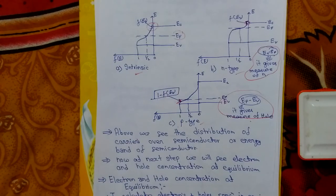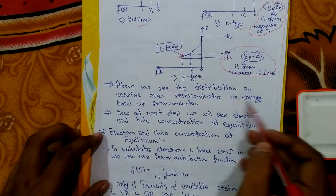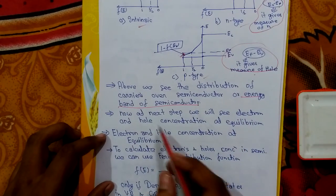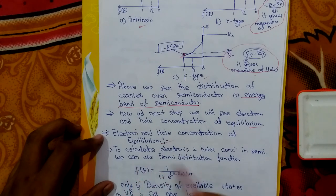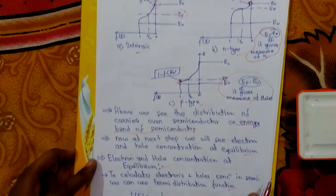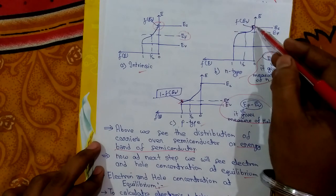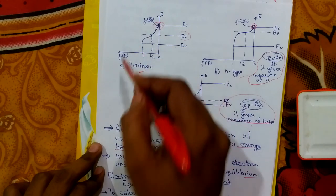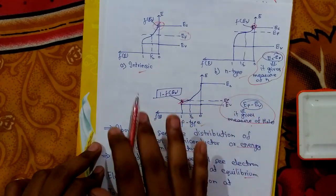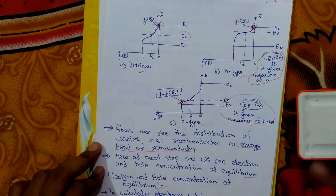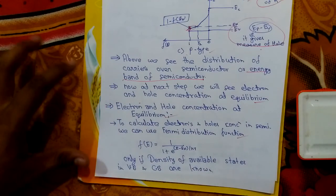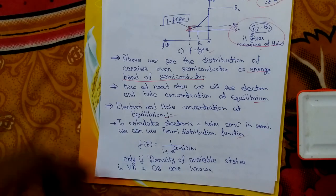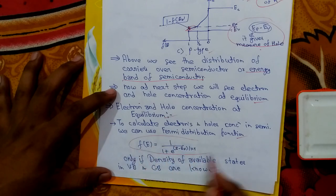We have seen the distribution of carriers over the energy band of semiconductors. Next we will see electron and hole concentration at equilibrium. To calculate electron and hole concentration in a semiconductor, we can use the Fermi distribution function, since we now know how electrons or holes are distributed over the energy band and their probability of occupying an energy level.